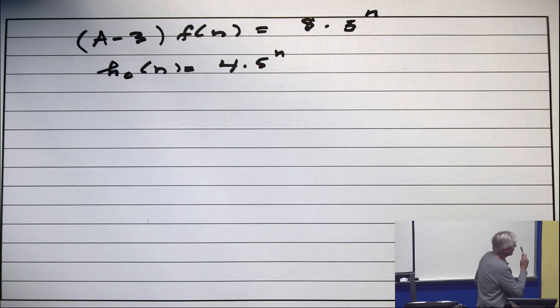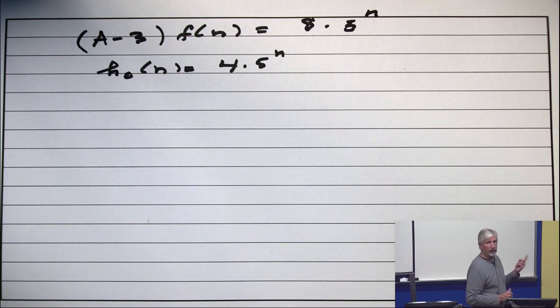Let's do it out loud. If I advance that function, that's 4(5)^(n+1), which is 20(5)^n. And if I just take 3 times F(n), that's 12(5)^n. 20 minus 12 is 8, so it works.